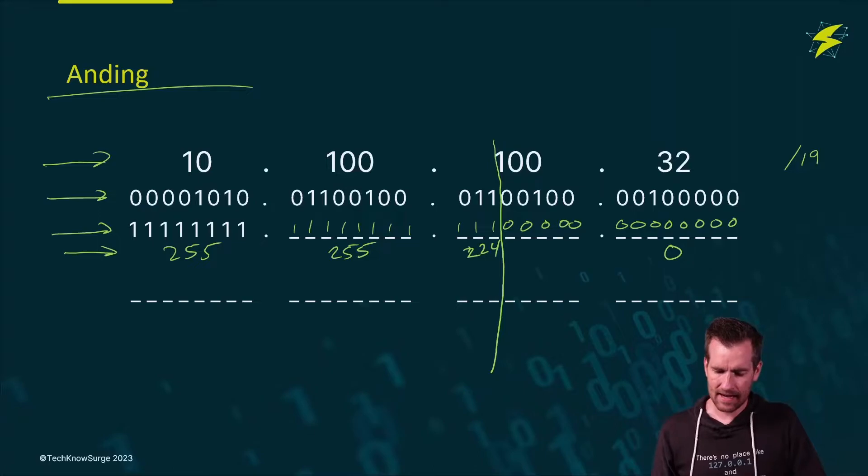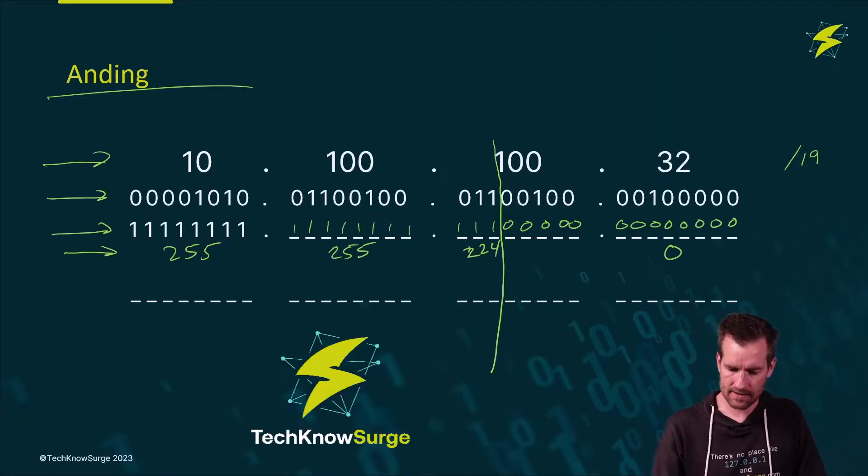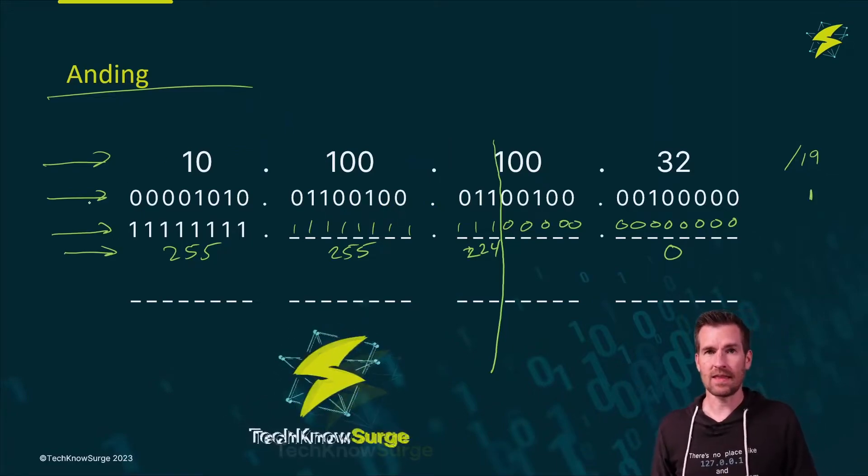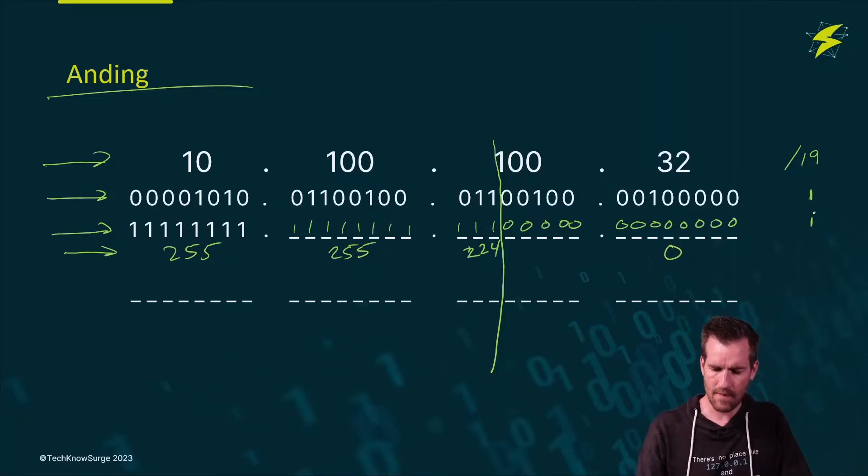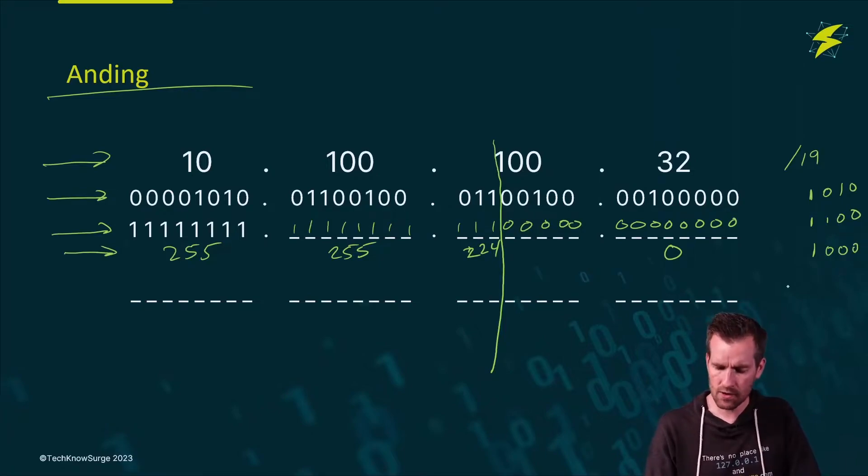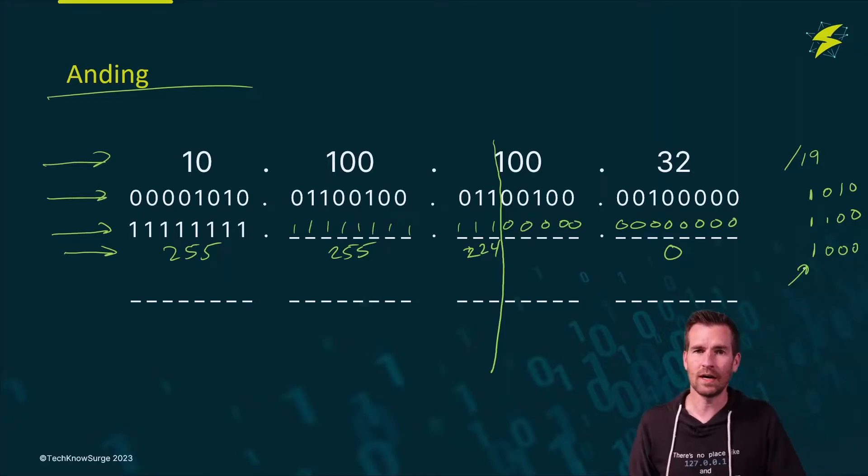How do we do anding? Well, anding says that you can get a 1 if there is a 1 in the IP address space and there's a 1 in the mask, then you will get a 1. But if you have a 0 and a 1, you'll get 0. A 1 and a 0, you'll get 0. And a 0 and 0, you'll get 0. So the only way that you get 1 is if there's two 1s. And you just go bit by bit with this.